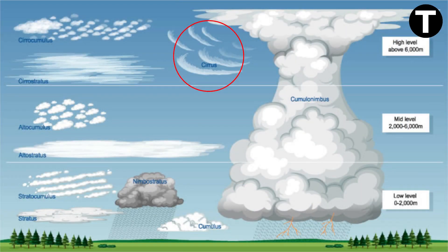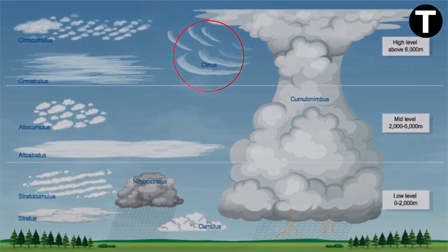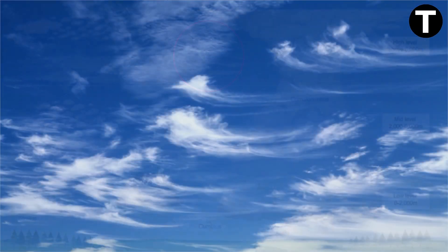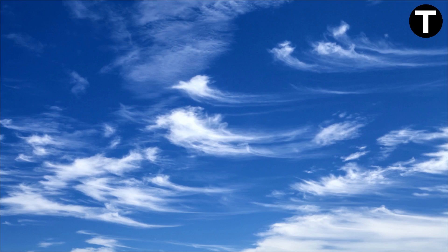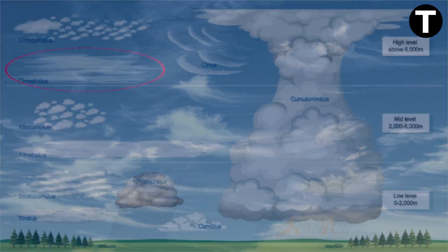Starting with cirrus clouds, these wispy formations are delicate white ice crystals. They can appear as fields or narrow bands and often turn pink or red during sunsets. They don't bring rain, though.